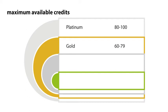Currently, for LEED version 4, the maximum available credits to obtain LEED Platinum is 80 to 100, and from there 60 to 79 to obtain gold, 50 to 59 to obtain silver, and 40 to 49 to obtain certified.